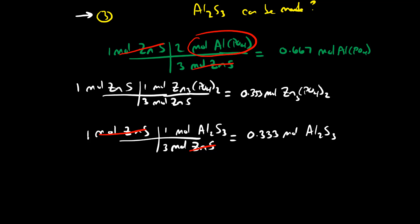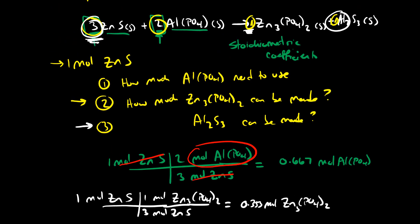So if you have a balanced chemical reaction and you know how many moles of one reactant or product you have, you're able to use the stoichiometric coefficients to relate the amounts of the other reactants or products. In the next video we're going to see how we can apply a measurable unit of mass — so if we know the mass of zinc sulfide, would we be able to figure out the mass of aluminum sulfide that we could make?